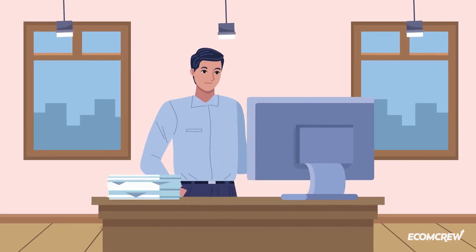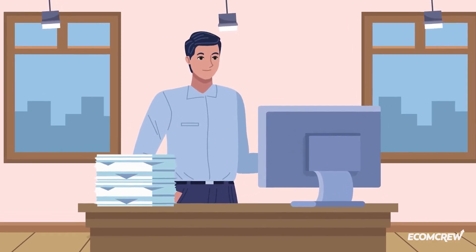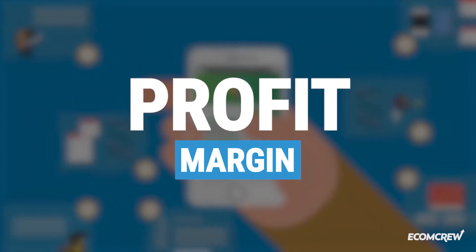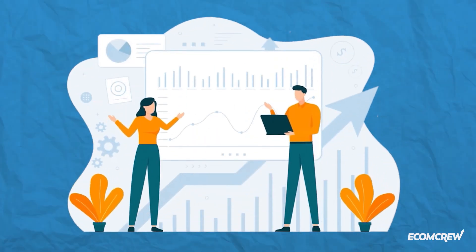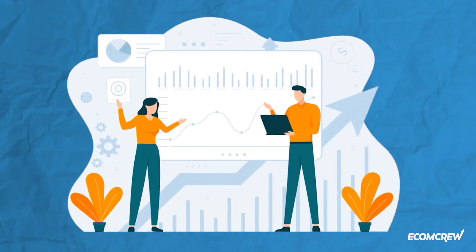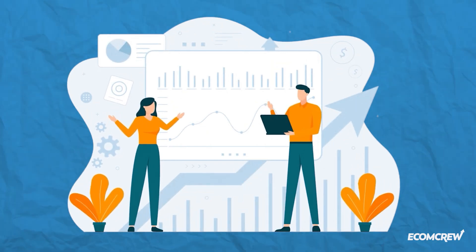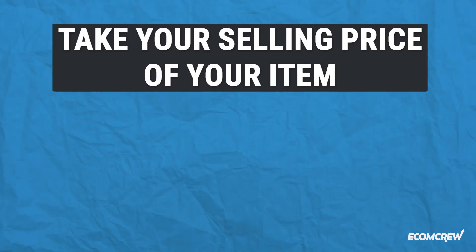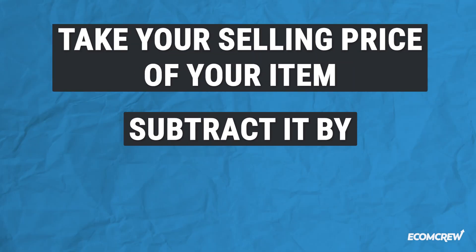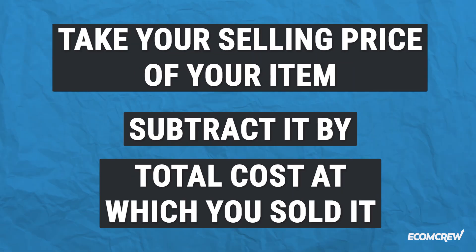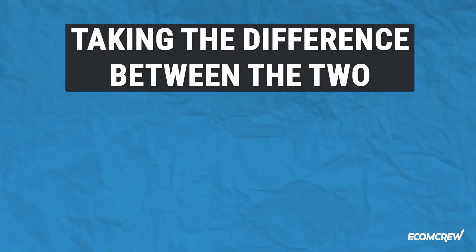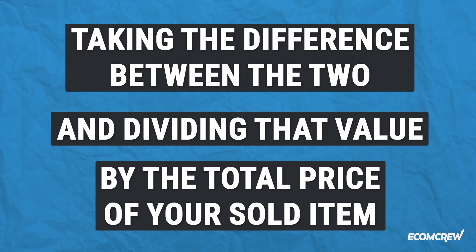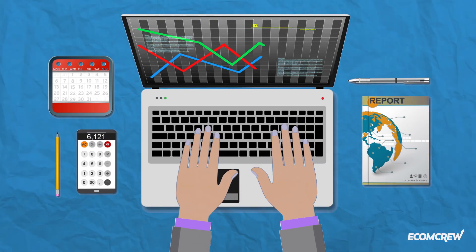To check your ACoS and see if it's at the right percentage, there are two metrics you need to think about. One of them is your profit margin. At the very least, your profit margin should be higher than your computed ACoS. To calculate your profit margin, take the selling price of your item, subtract the total cost at which you sold it, then divide the difference by the total price of your sold item.